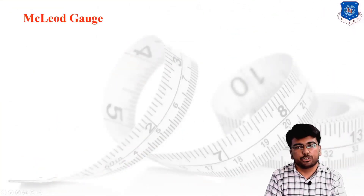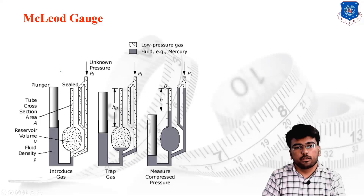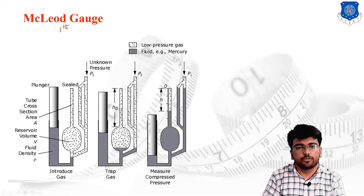The next gauge we will discuss is the McLeod gauge. The McLeod gauge is a very useful instrument for pressure measurement. Let us first understand its basic constructional features and then its working. I will discuss this figure by figure — this is the first figure, this is the second, and this is the third figure.